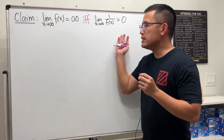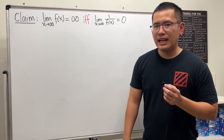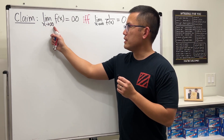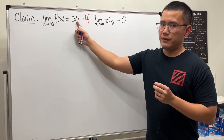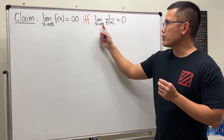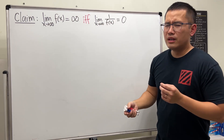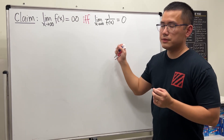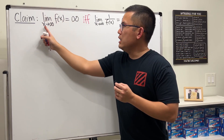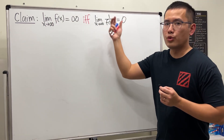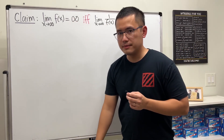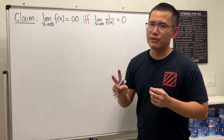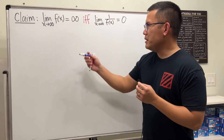Many of you have been using this idea when calculating limits, but have you ever seen a proof? Let's talk about the statement first: the limit as x approaches infinity of f(x) equals infinity if and only if the limit as x approaches infinity of 1 over f(x) equals zero. The 'if and only if' means we go two directions — if this happens then that happens, and vice versa. This is called a bi-directional statement, and to prove it you need two proofs.